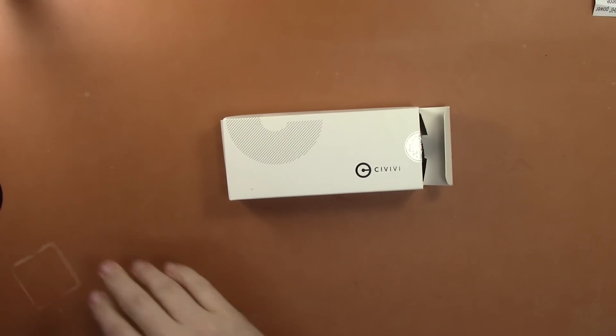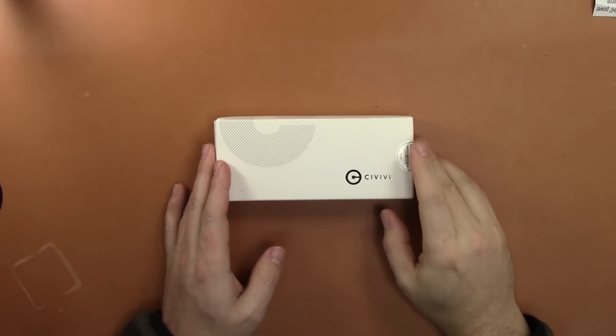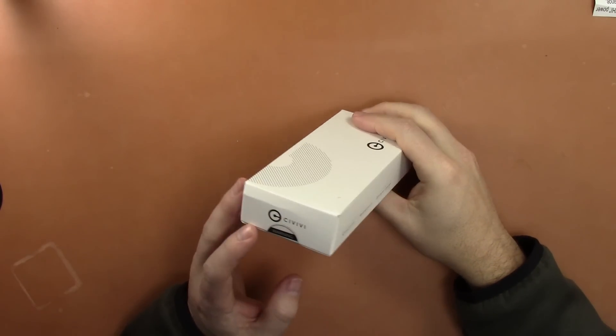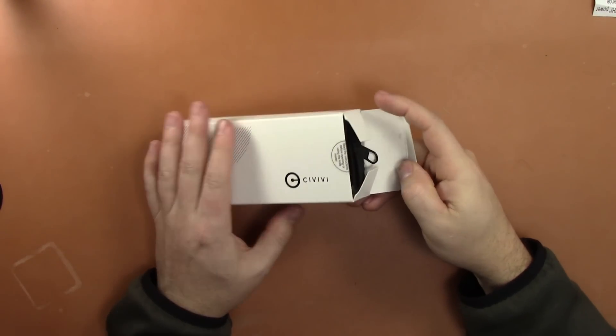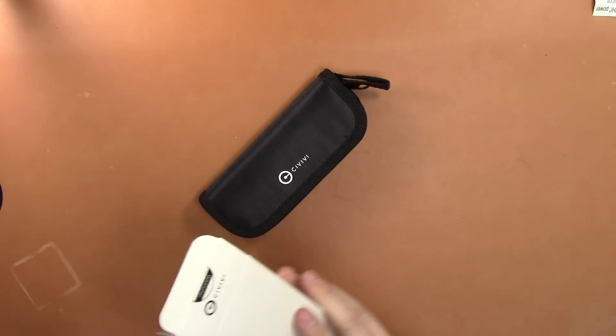What's happening to YouTube? We got a new video for you on a Civivi knife, the budget line from Wee. This is their packaging. It looks almost identical to the Wee actually. And you get a cool pouch, which is always good.